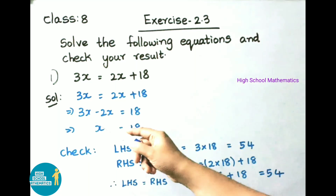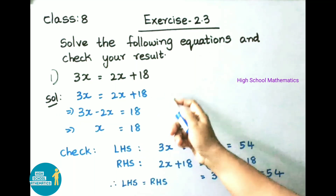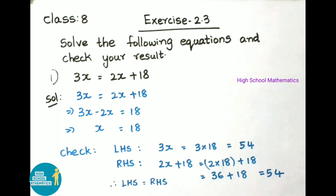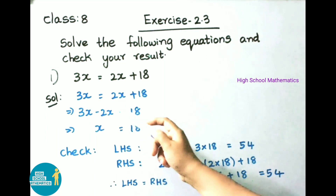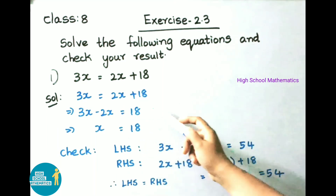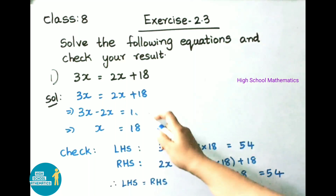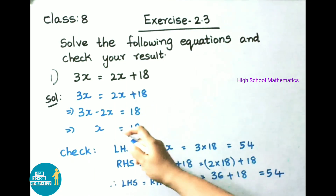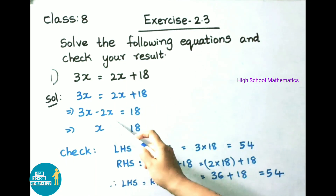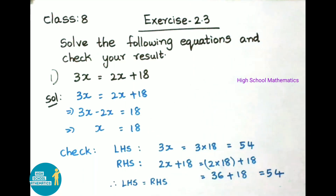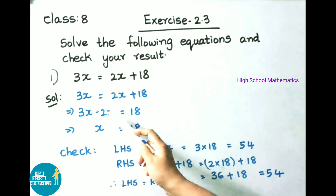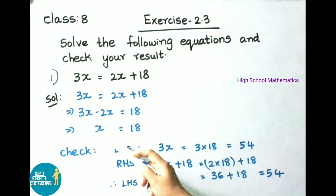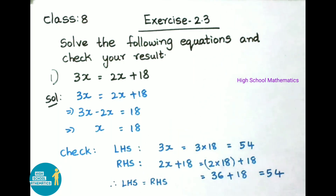See the first sum: 3x = 2x + 18. Given equation is 3x = 2x + 18. Here, plus 2x on transposing becomes minus 2x. So 3x minus 2x equals 18. That implies x equals 18.